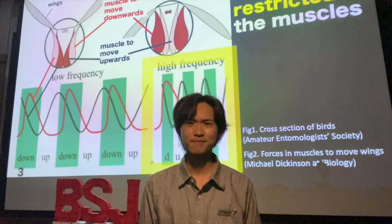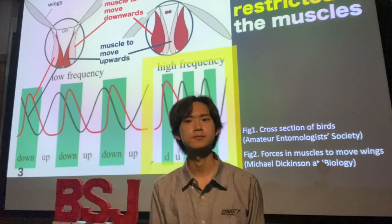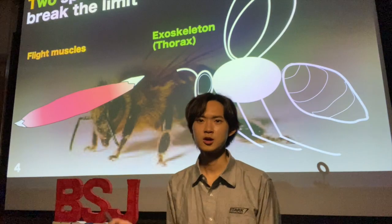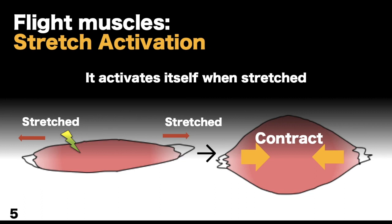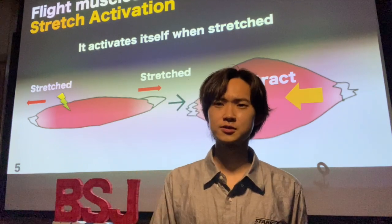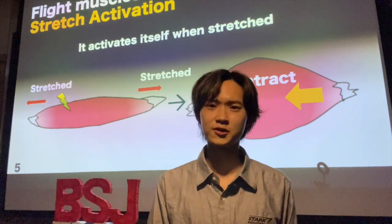So how do flies and bees break this limit? They use specialized mechanisms: flight muscles and the skeleton. First, the flight muscle — this muscle activates itself when it is stressed. It does not need to be controlled by the neural systems. This property is called stretch activation.